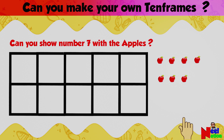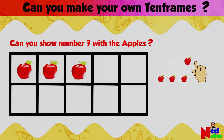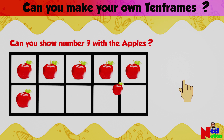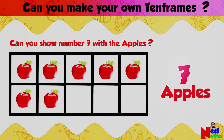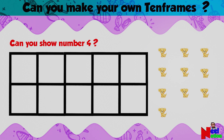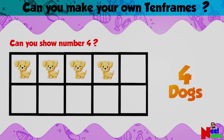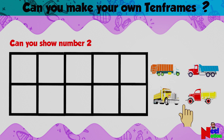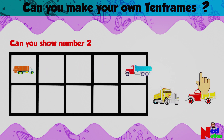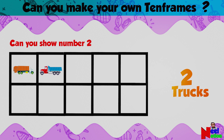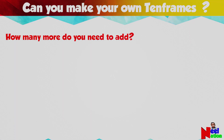Can you show number seven on the 10 frame with apples? Yes — one, two, three, four, five, six, seven. Seven apples on the 10 frame! Can you show number four on the 10 frame? One, two, three, four — four dogs on the 10 frame! Can you show number two on the 10 frame? One, two — two trucks on the 10 frame!